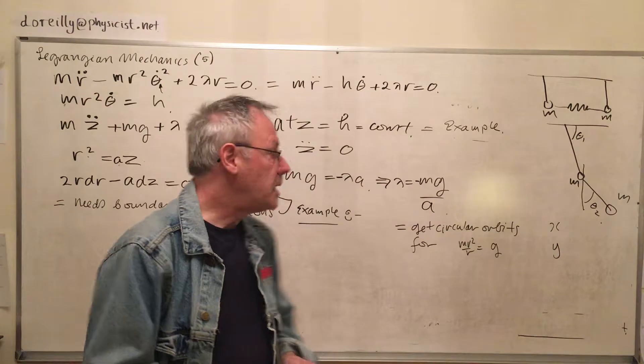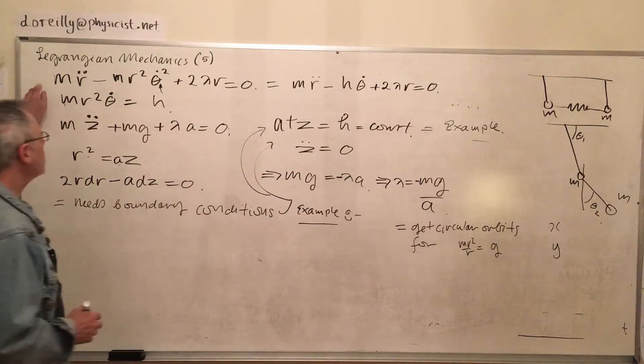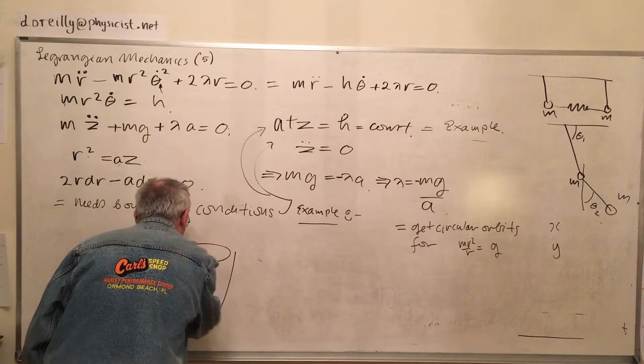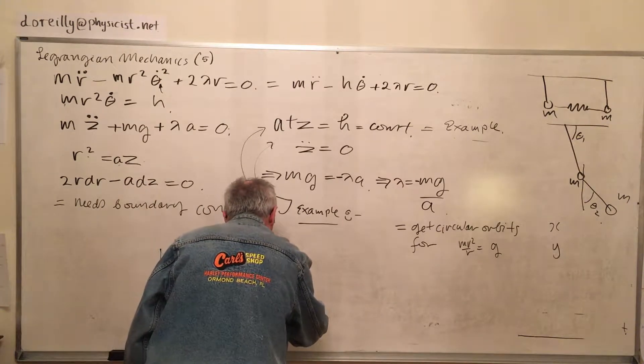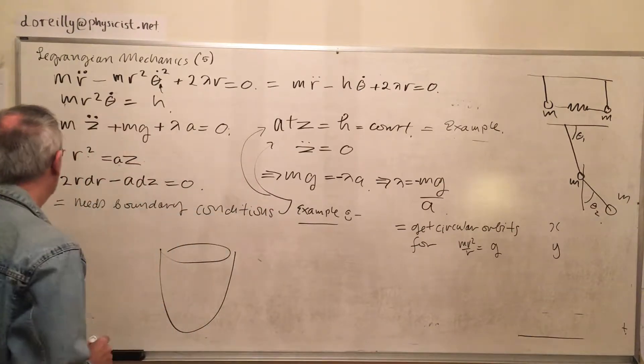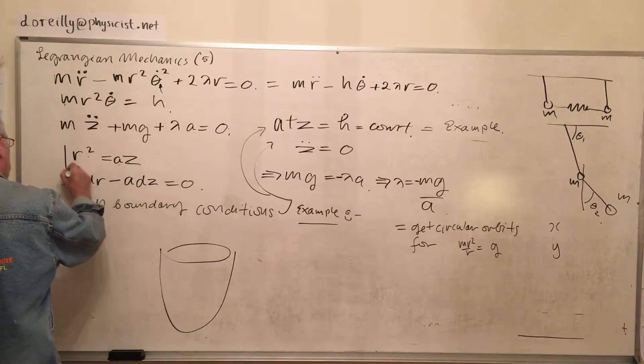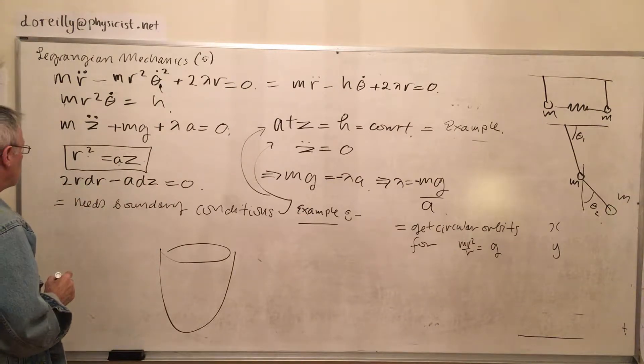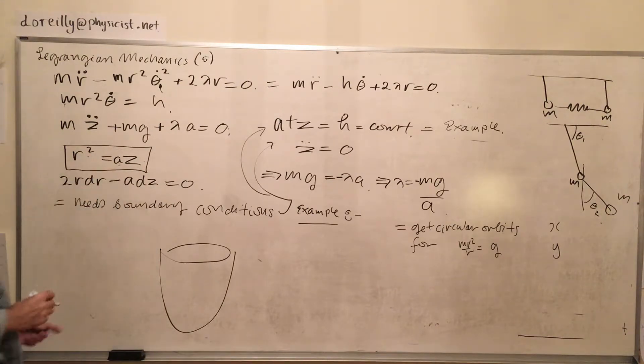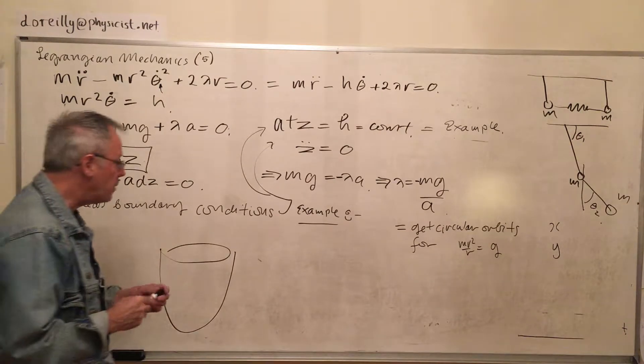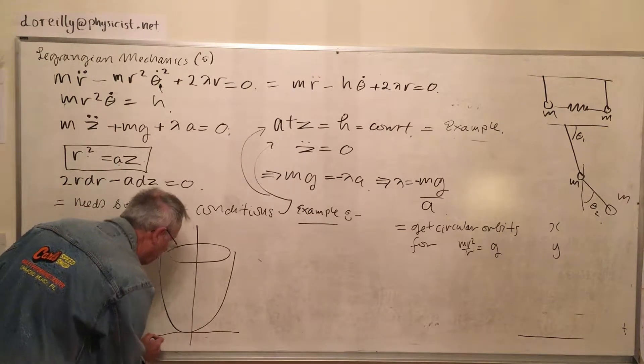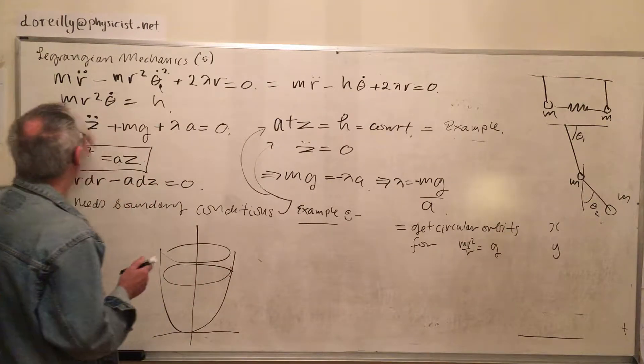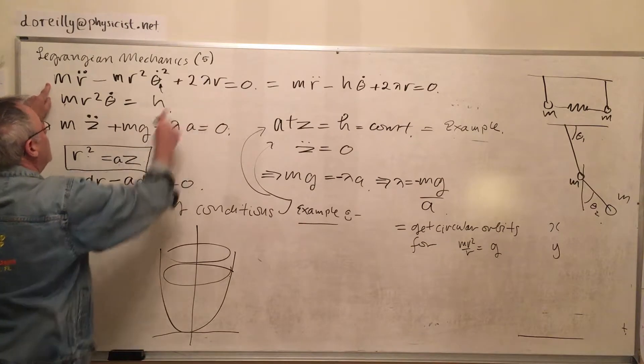Now, today, here's what we had the last day. We applied the Lagrangian equations to the case of a particle moving in a paraboloid. Where is it? r squared equals az. So, therefore, z is 1 over a times r squared. It's a paraboloid. And we centered it on the origin. Now, you could have a defined height h. So we got these three equations which contained a Lagrange multiplier.